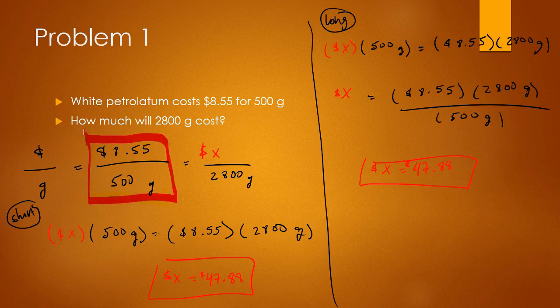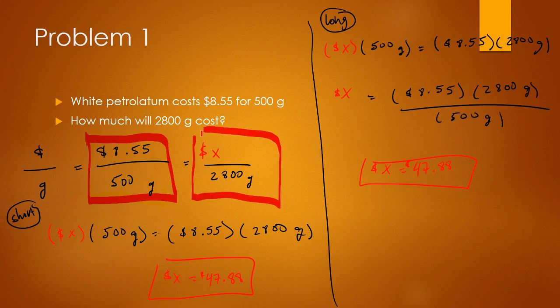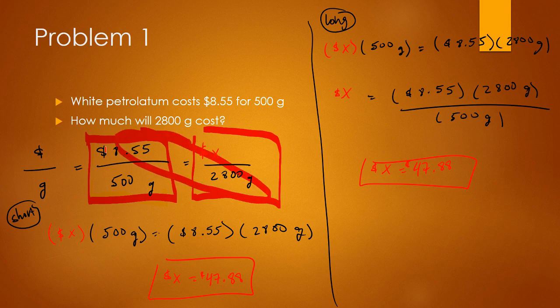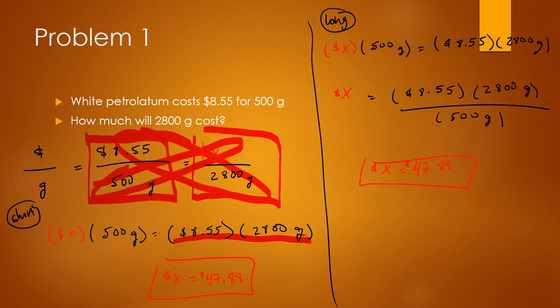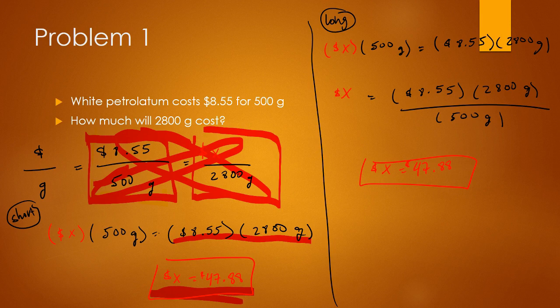So $8.55 divided by 500 grams. And as you can see, we only have three variables shown and two units. So on the other side, I have the unknown amount of dollars divided by the number of grams that you want the proportion to be in. So doing cross multiplication, $8.55 multiplied by 2,800 grams on one side. And on the other side, you have 500 times x. And that is how I got this answer, $47.88.